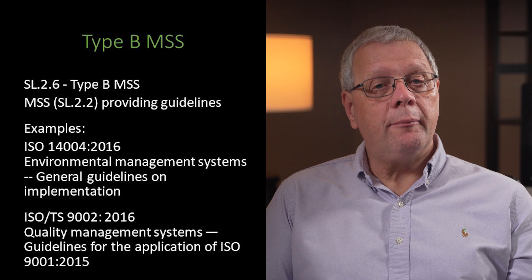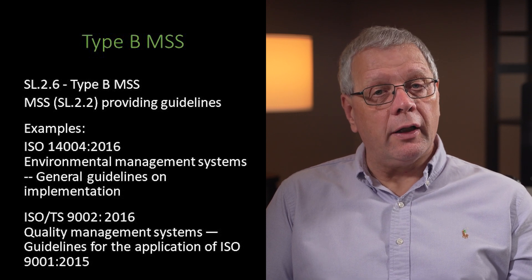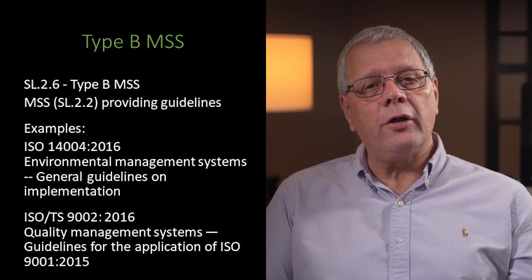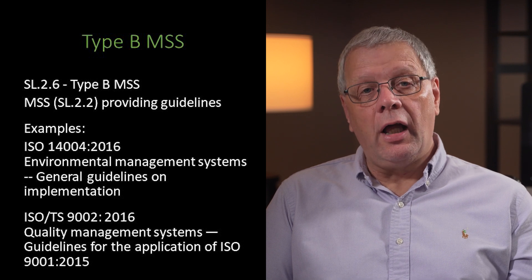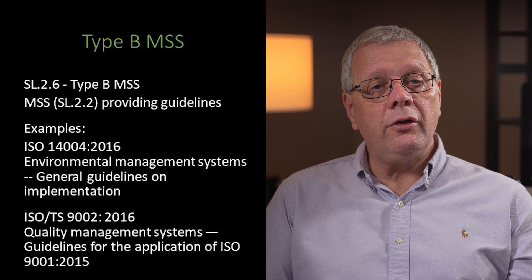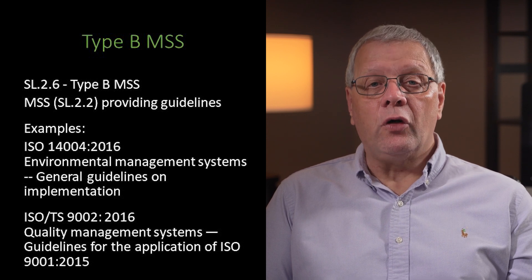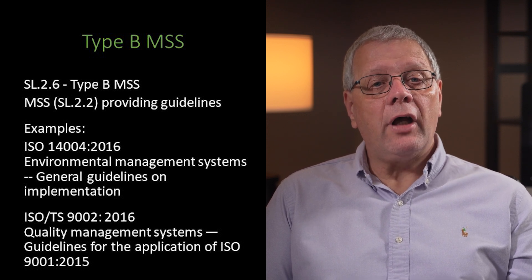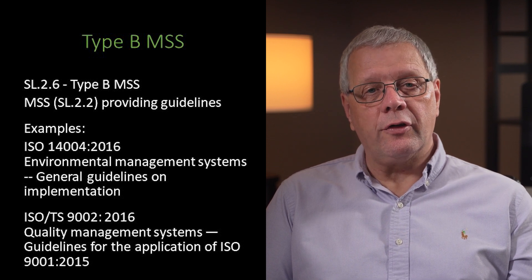Additionally, some Type B management system standards which provide guidelines have also been updated to the Annex SL high-level structure approach. These include ISO 14004 for environmental management systems and ISO 9002 for quality management systems.